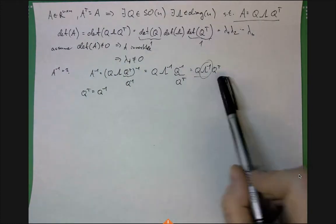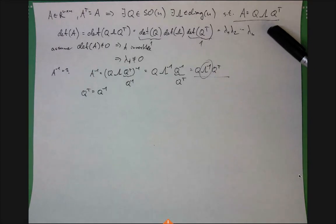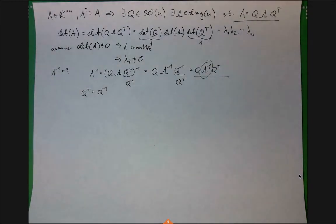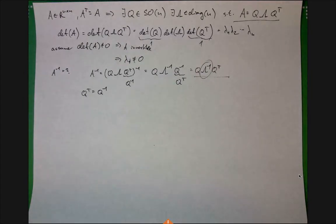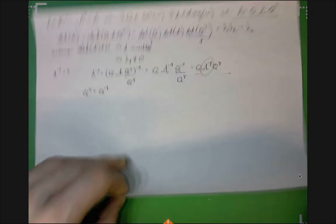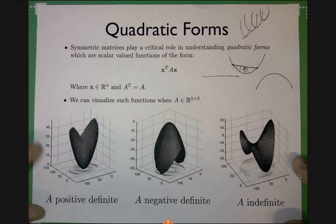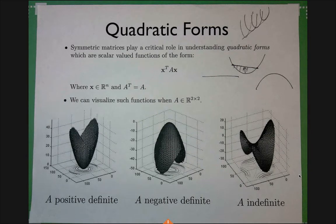The spectral decomposition exposes the structure of the matrix such that it's very easy to compute its inverse. Normally, the inverse would be an O(n³) algorithm, but if you already have this computed, it's super easy. Quadratic forms are covered in linear algebra for a good reason — they tie very closely with eigenvalues and eigenvectors of symmetric matrices.